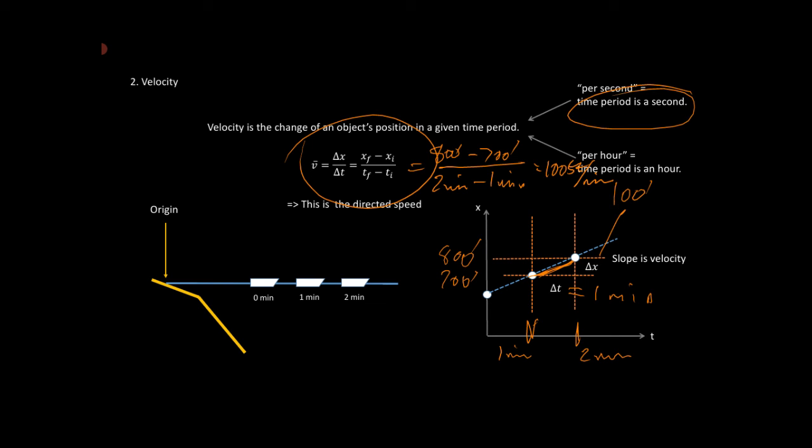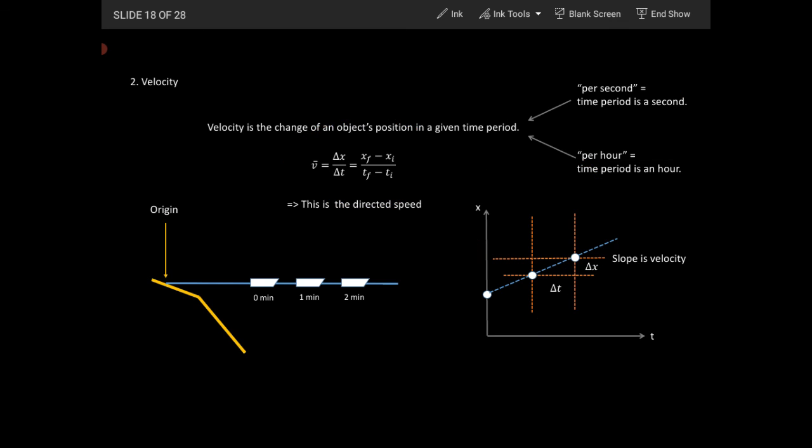So the time period per unit time. In this case, the units, since it's feet per minute, are minutes. A lot of times it will be feet per second. A lot of times it will be miles per hour. You just have to keep in mind what the unit time is.